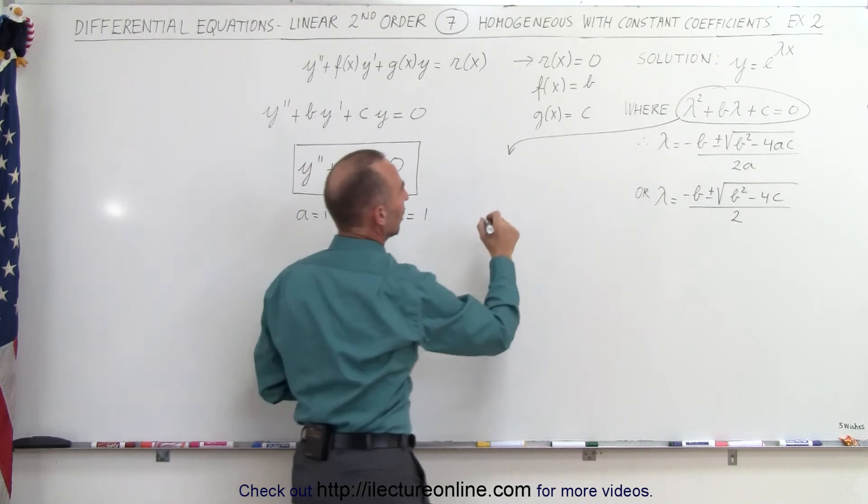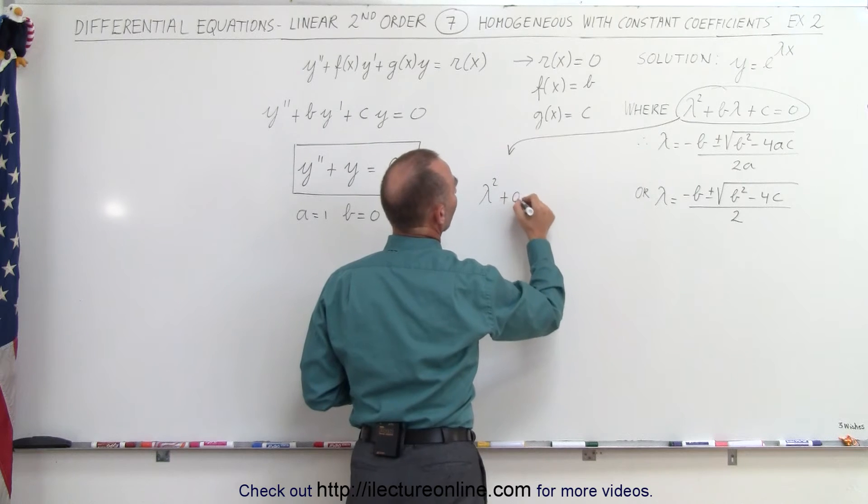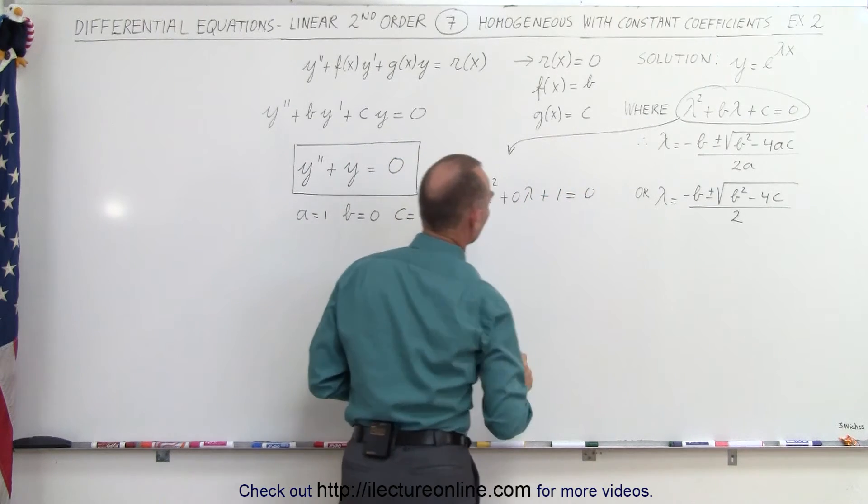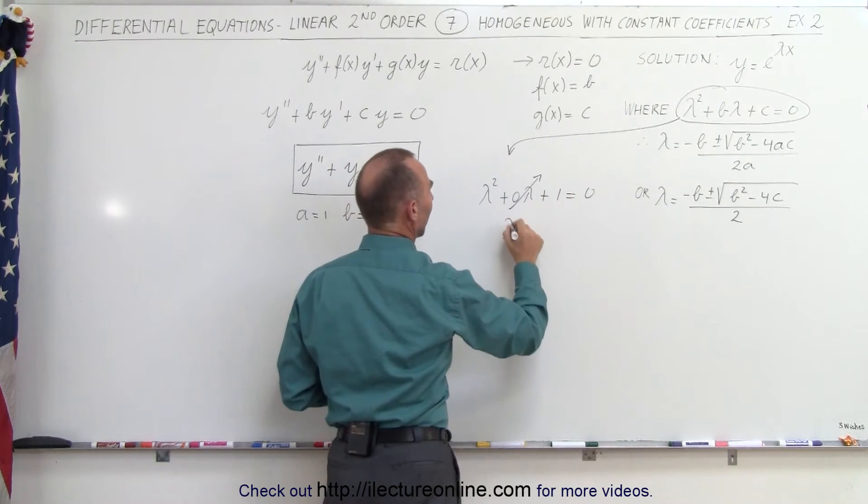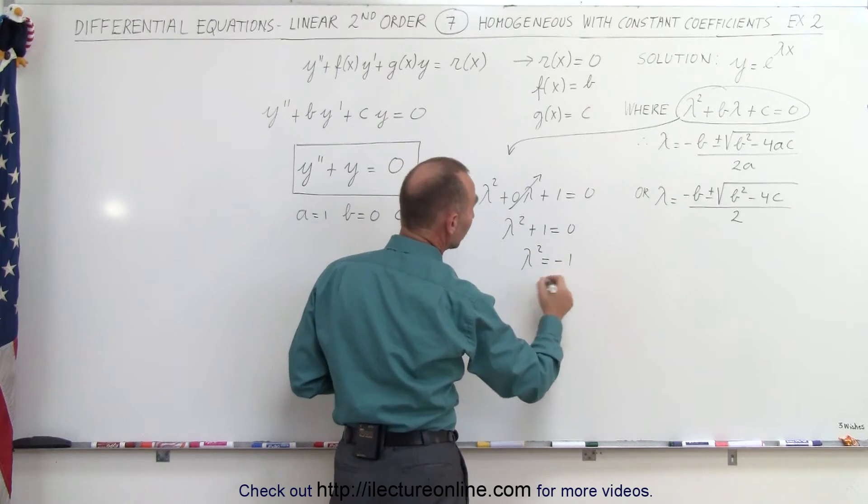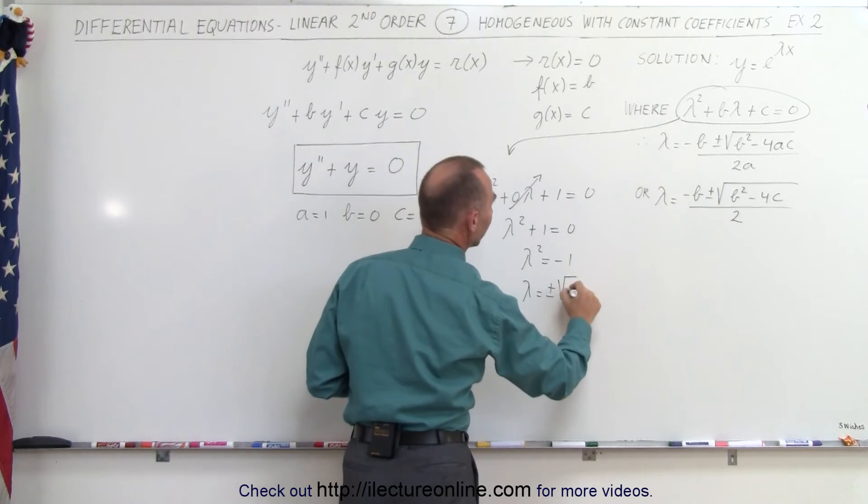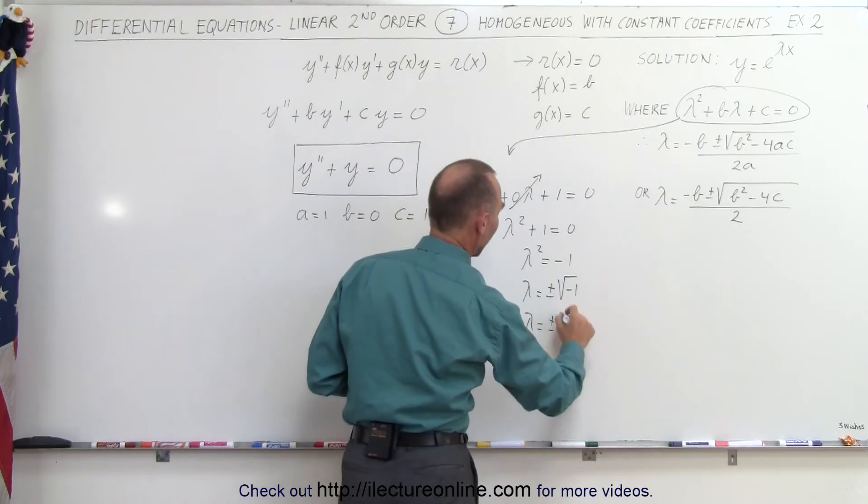So we would plug that in here, we get lambda squared plus zero times lambda plus one equals zero. So now when we go ahead and get rid of this, then we have lambda squared plus one equals zero, or lambda squared is equal to negative one, which means lambda is equal to plus and minus the square root of negative one, which of course, that means lambda is equal to plus or minus i.